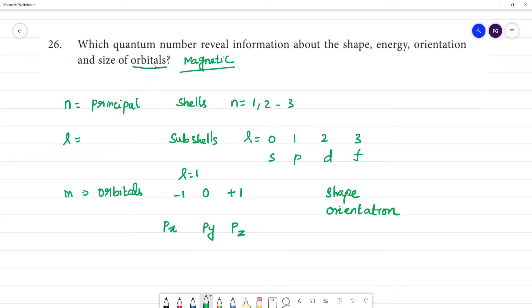Number of shells, that is principal quantum number. Last one is spin quantum number, which is used for orientation, that is clockwise or anticlockwise spin of electron.